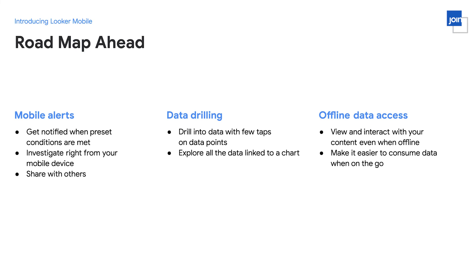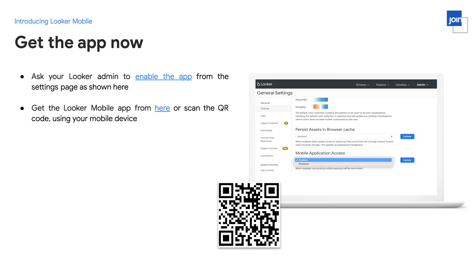I am very excited about the things ahead of us and looking forward to building data experiences that you love. I would encourage you to try out the app today. First, reach out to your Looker admin to enable the app permission for you. Then go to the App Store or Play Store to download the Looker app, or scan the QR code on the slide. You can log in using your QR code or your credentials. We would love to hear your feedback as we like to improve features based on your input. Thank you again for joining me here today.